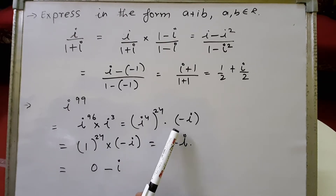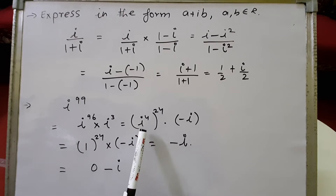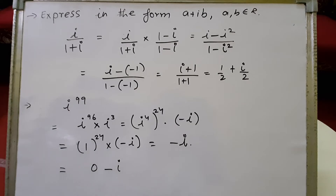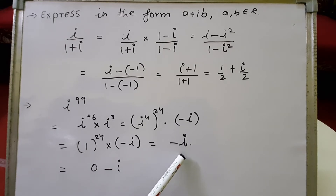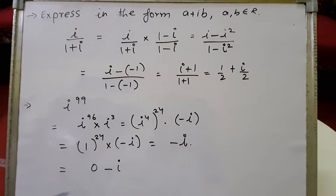Since i to the power 4 equals 1, we get 1 to the power 24, which is 1. And i cubed equals minus i. So the expression becomes 1 into minus i, which is minus i. Converting to a plus ib form, we write minus i as 0 minus 1·i. This is how we can simplify any complex number to the form a plus ib. Please note down the solution.